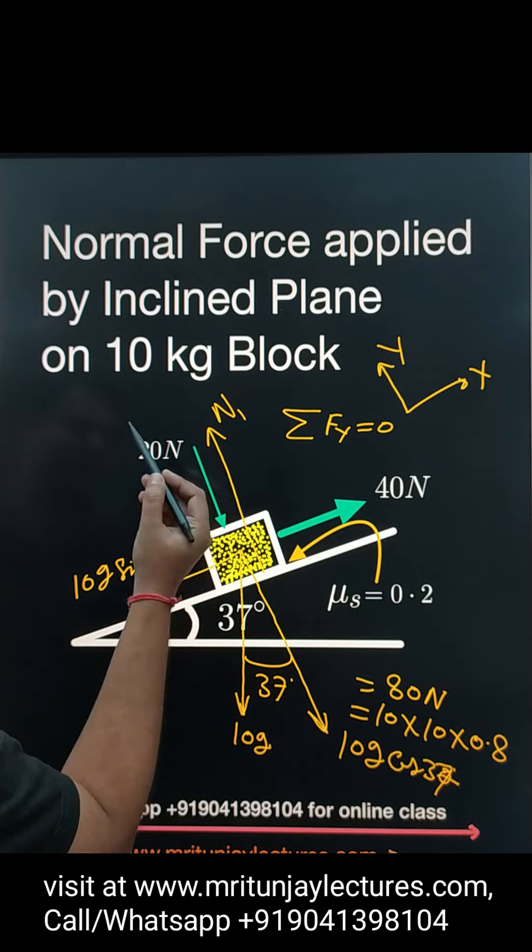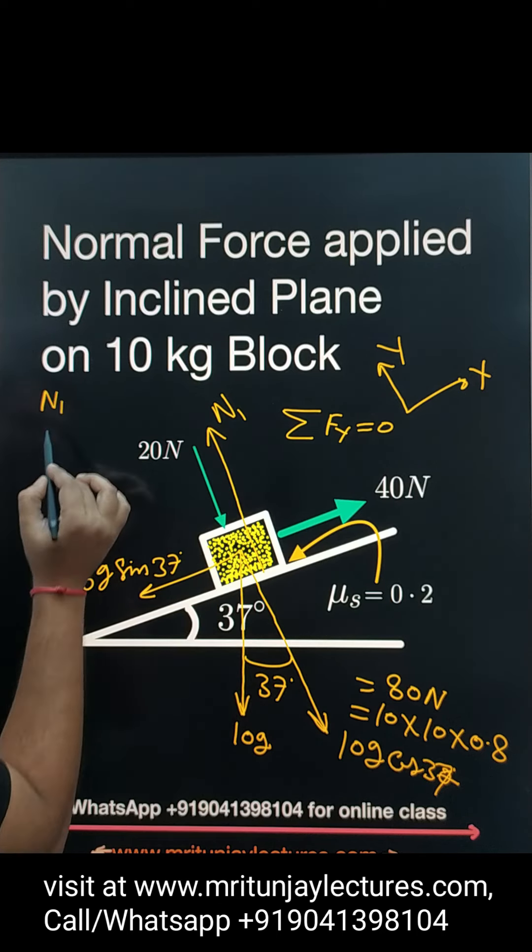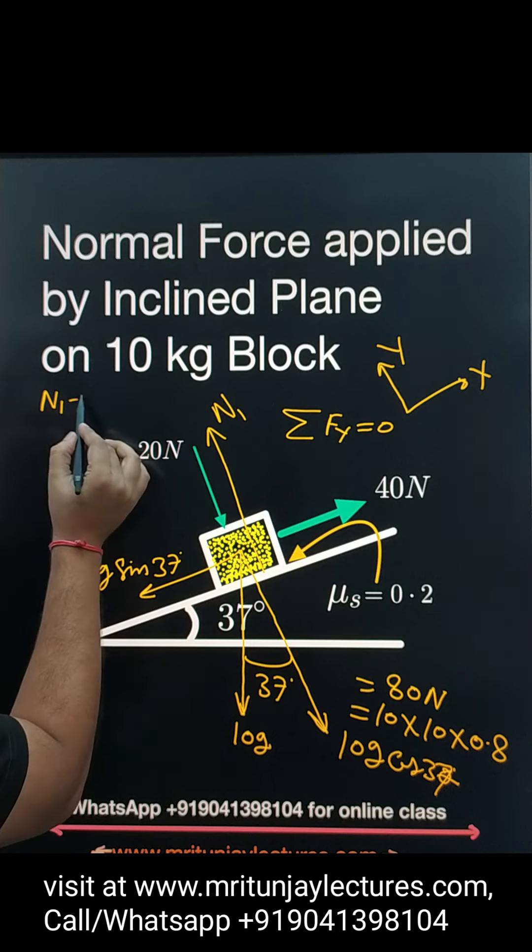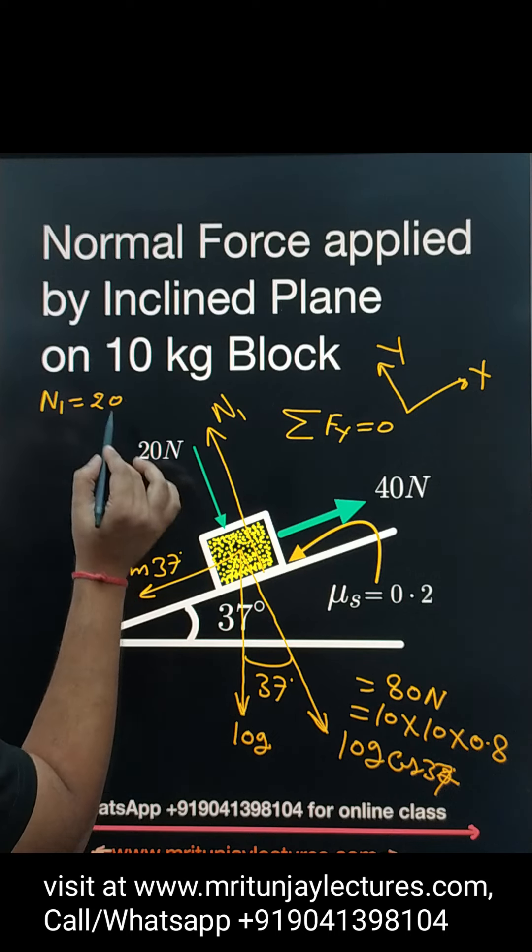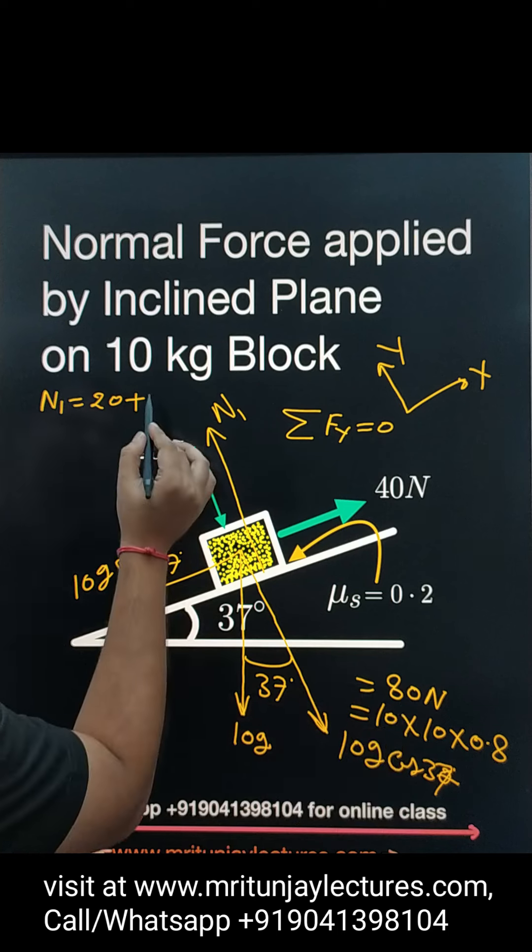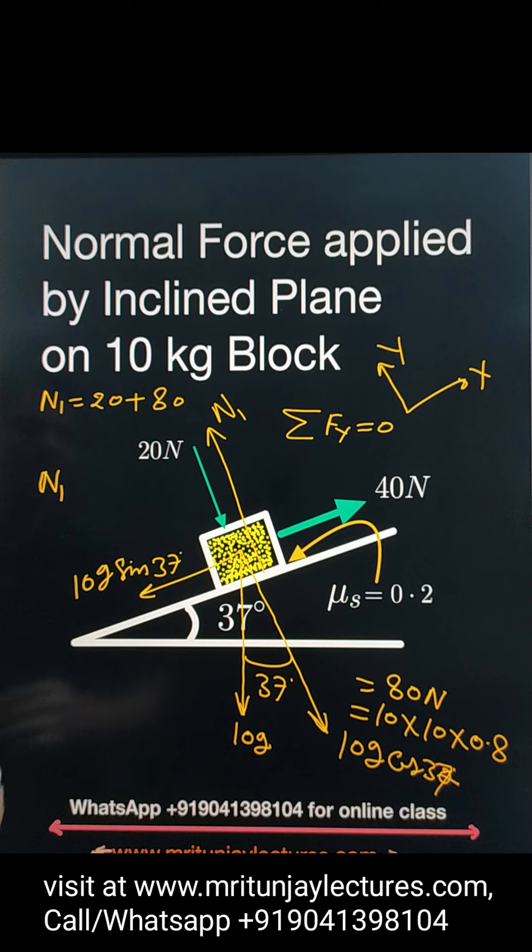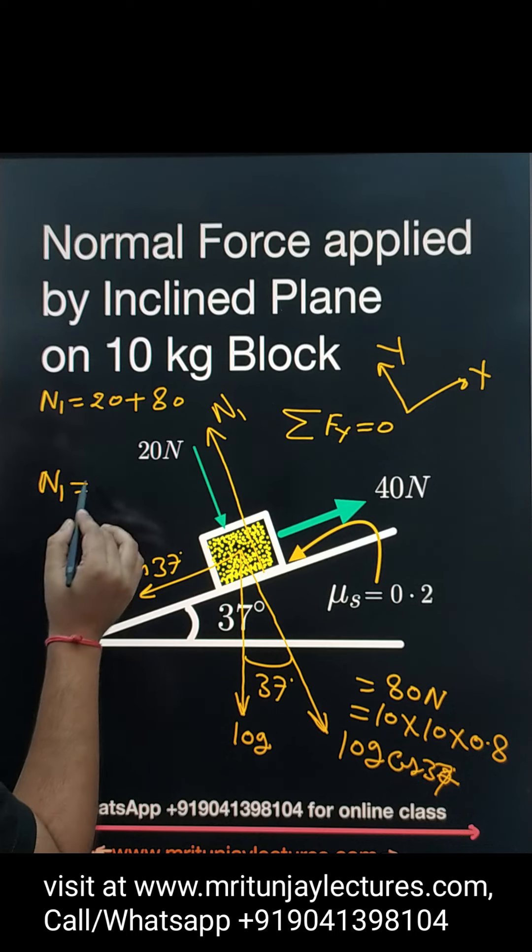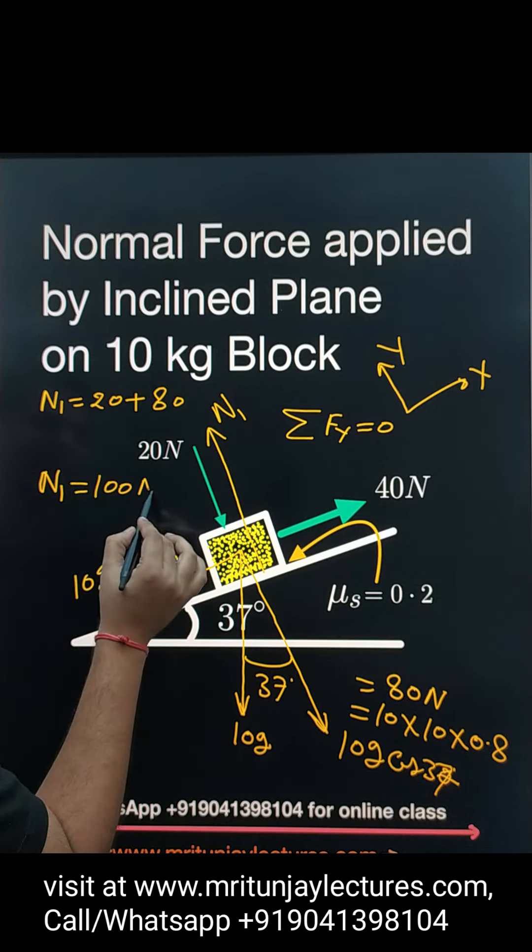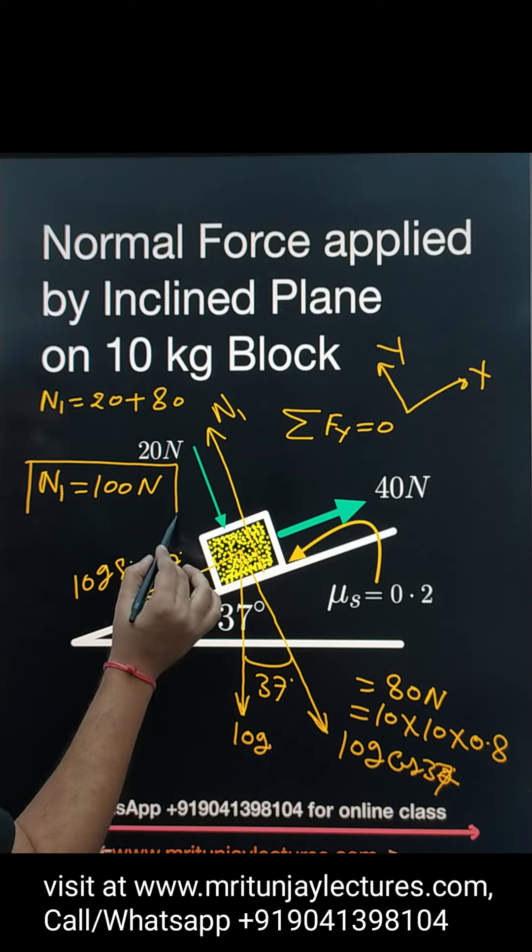Normal force in Y, capital Y direction is N1. This equals how much? 20 plus that force is 80. So total, for total force in Y direction, N1 is how much? 100 Newton, that is 100 Newton. I hope it's clear.